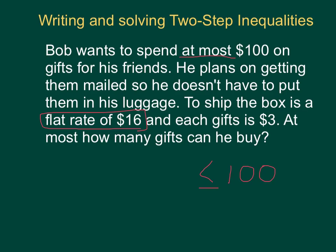And he plans on getting them mailed, okay. To ship the box is a flat rate of $16, and each gift is $3. So we need to figure out at most how many gifts can he buy. So it's going to be $3 each gift, and we don't know how many gifts it is. So how many gifts is going to be x, so 3 times the number of gifts gives us the total cost that he's going to spend just in the gifts.